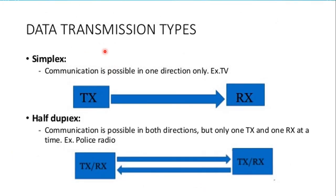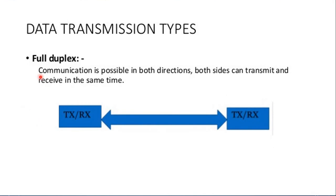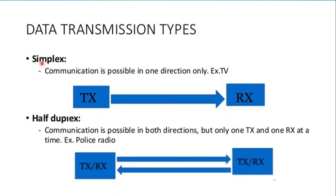Based on data traffic, types of communication can be classified into three ways: simplex mode, half-duplex mode, and full-duplex mode. In simplex mode, data can be transmitted from transmitter to receiver only — communication is possible in one direction only. That type is called simplex mode. An example is TV.